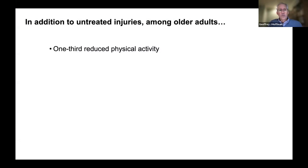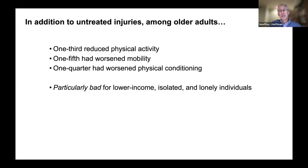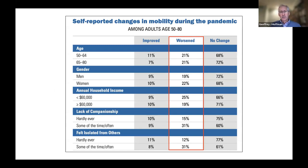We found that 20% reported having worsened mobility, and another quarter reported worse physical conditioning. We also identified particularly bad outcomes during the early pandemic for lower-income, isolated, and lonely individuals. Lower-income individuals had a quarter with worsened mobility; those who lacked companionship had a third with worsened mobility; and those who felt isolated also had a third with worsened mobility.